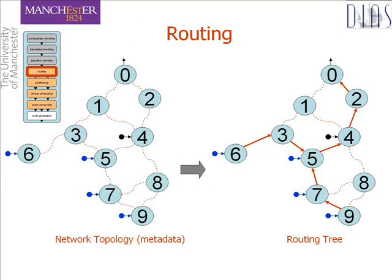The routing step determines a routing tree for communication links that the data flows in the physical algebraic form can then rely on. This is achieved by computing a Steiner tree — that is, a tree of minimal cost derived from the network topology graph with the required set of nodes, using any additional nodes which are necessary. The resulting routing tree consists of the source nodes for the river and hilltop streams, the sink node where the data is to be delivered, and nodes 2 and 3 which are used solely to relay results.